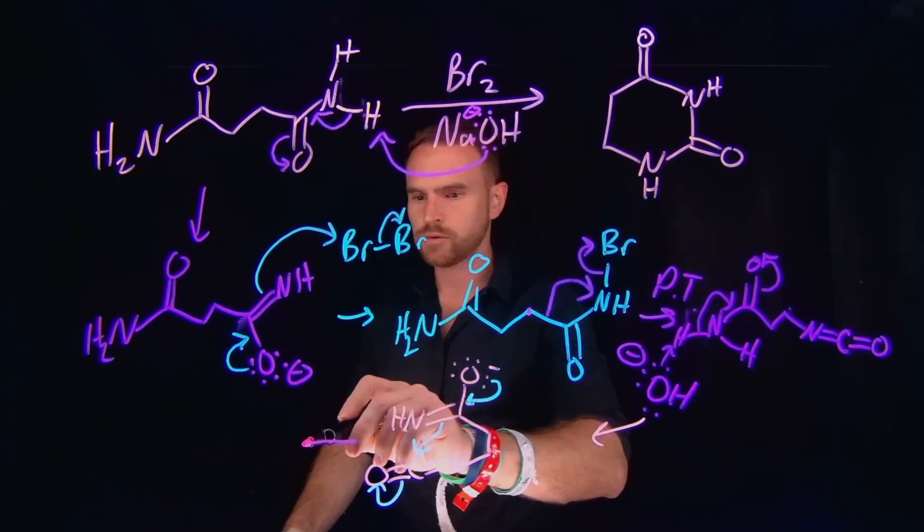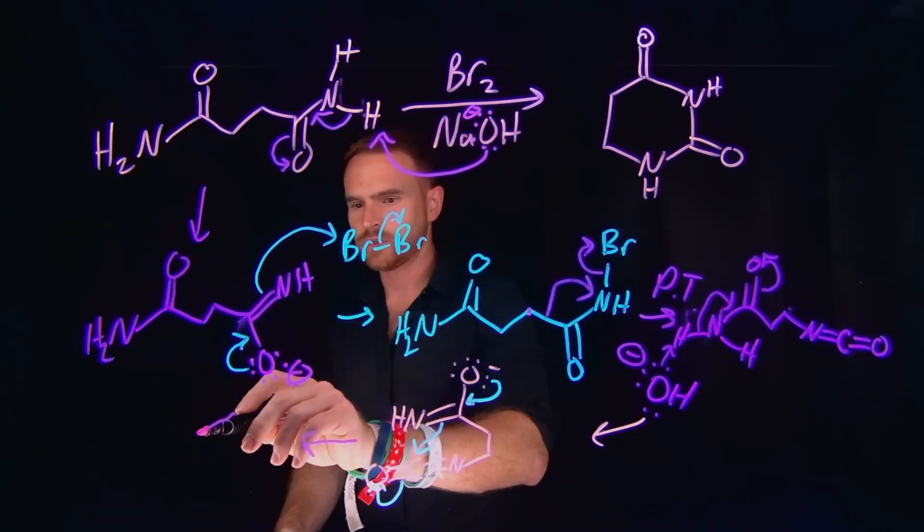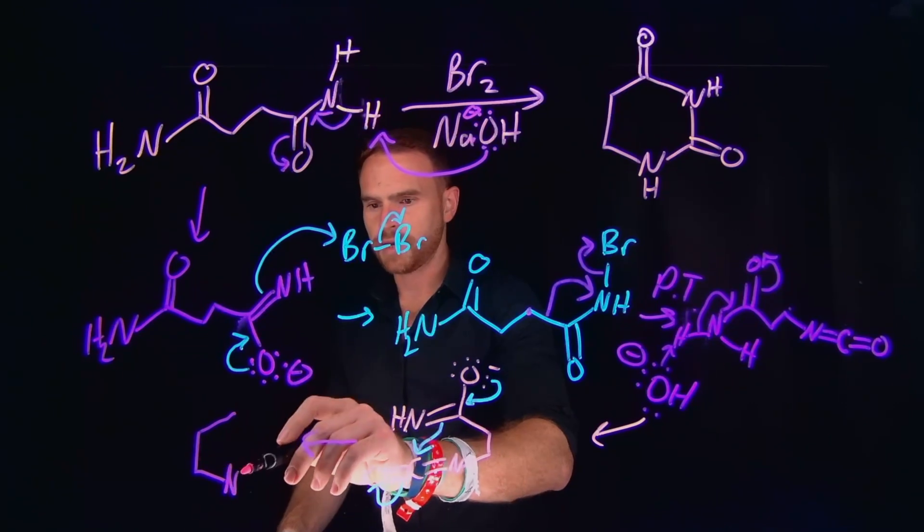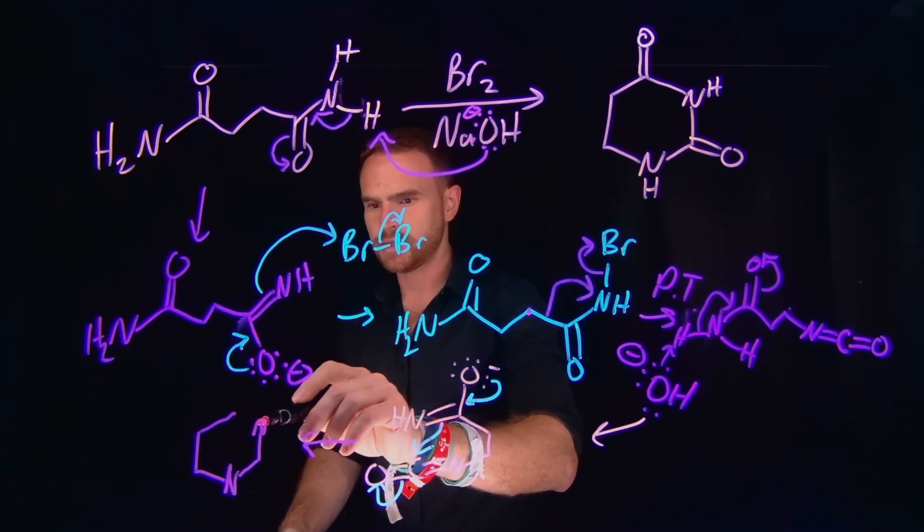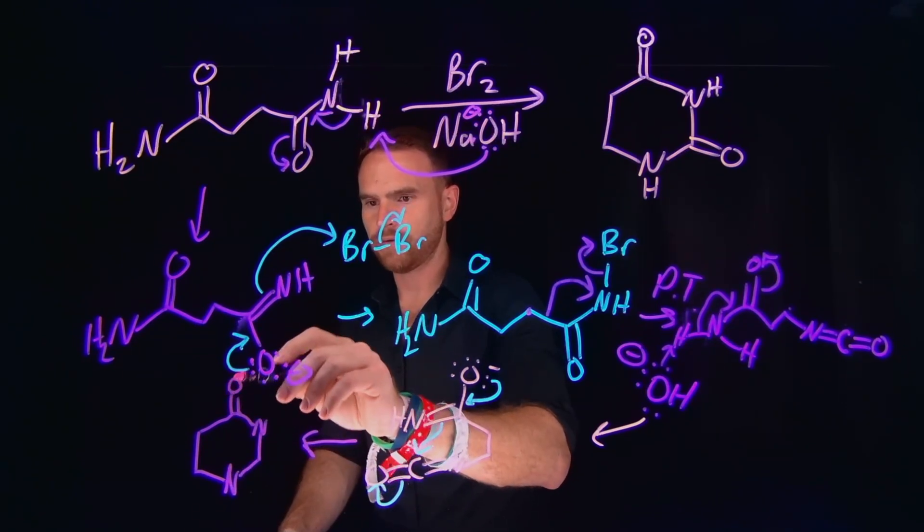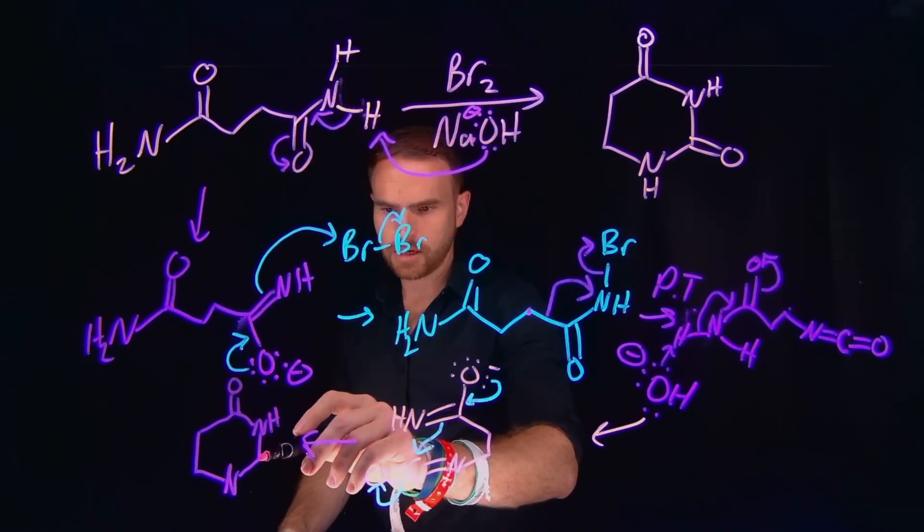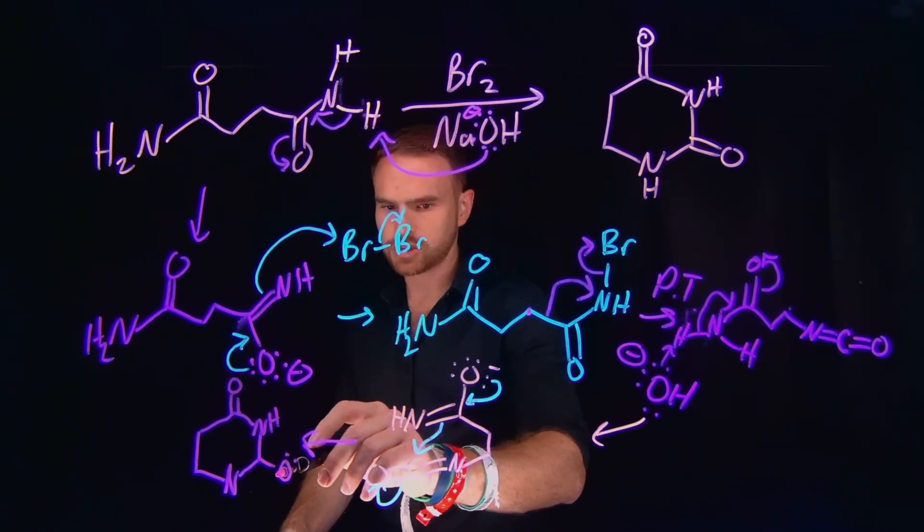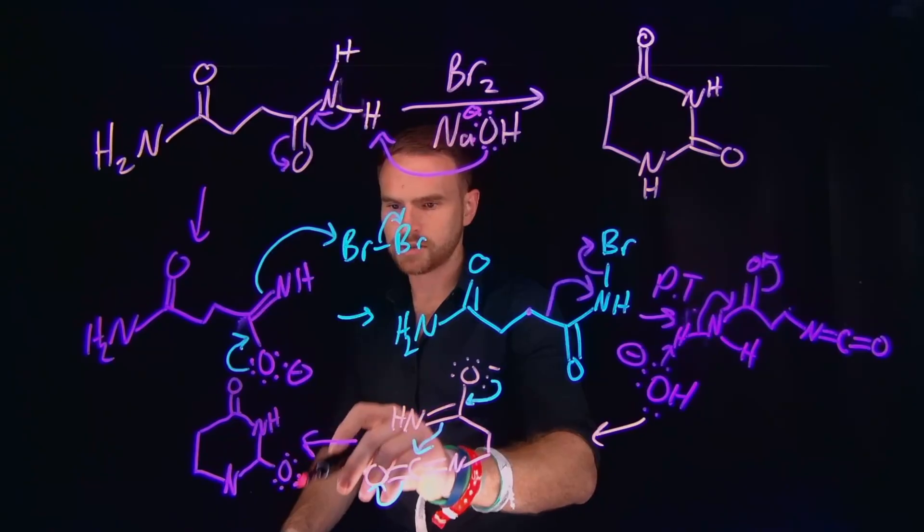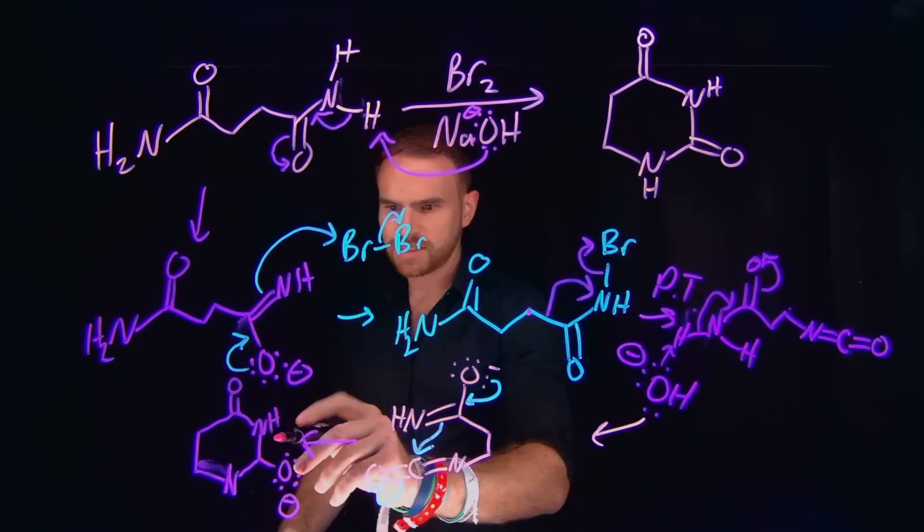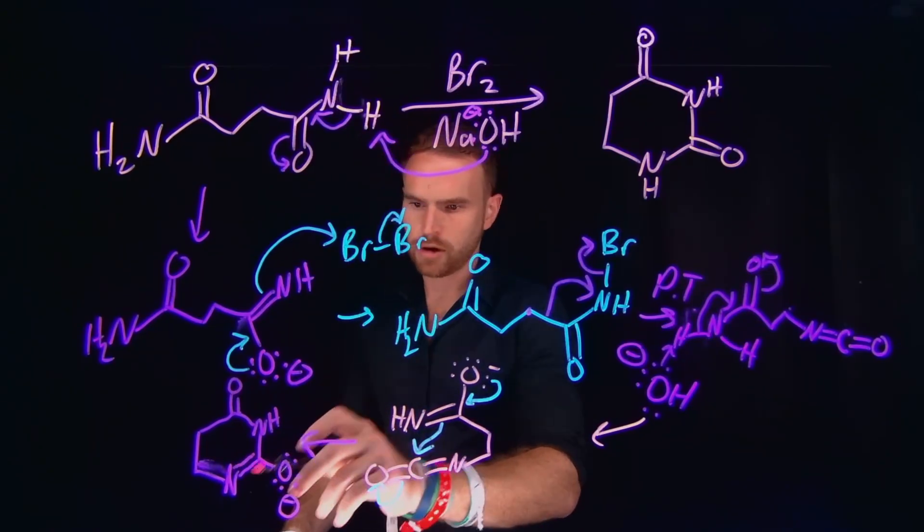So then now that we've closed this ring, we're actually most of the way to our final product, where you end up with the nitrogen at this position, a nitrogen at this position. Here we already have our carbonyl group. We still have the NH group located at this position. Here we have our negatively charged oxygen, because we kicked over these pi electrons. And we still have this nitrogen to carbon double bond located in between them.